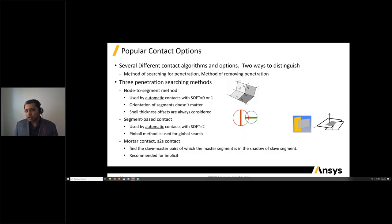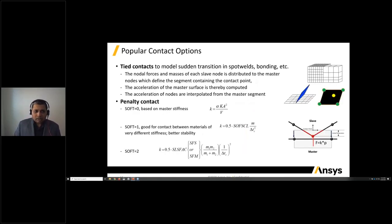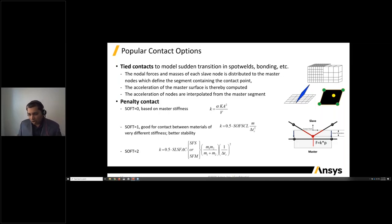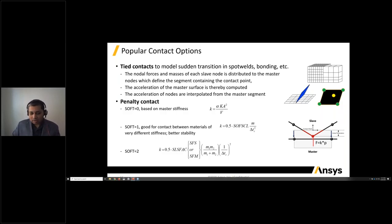We also have the mortar contact option for implicit calculations — useful for dummy positioning, pre-stressing, or other applications. We recommend mortar contact for implicit. For modeling sudden transition in spot welds or bonding, a tied contact is available. The penalty contact with soft equal to zero was based on master stiffness. Soft equal to one handles situations where a soft component contacts a hard component, allowing better stability. More recently, soft equal to two dynamically adjusts the penalty of the contact.